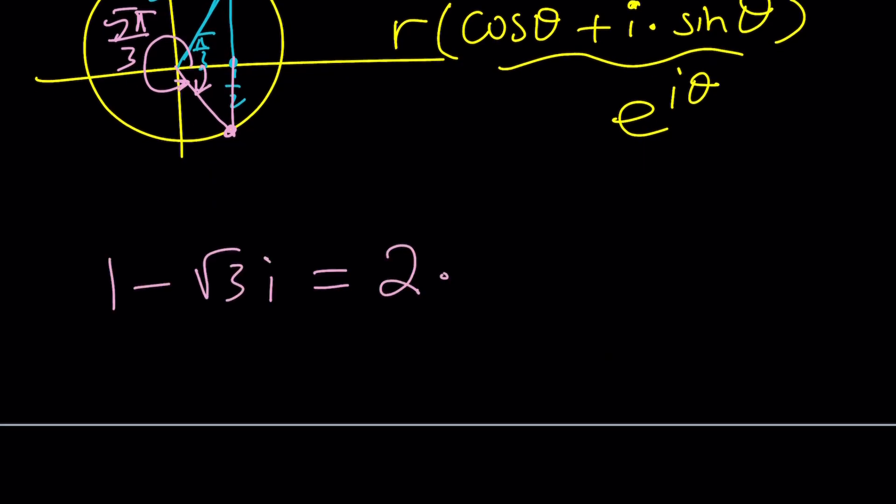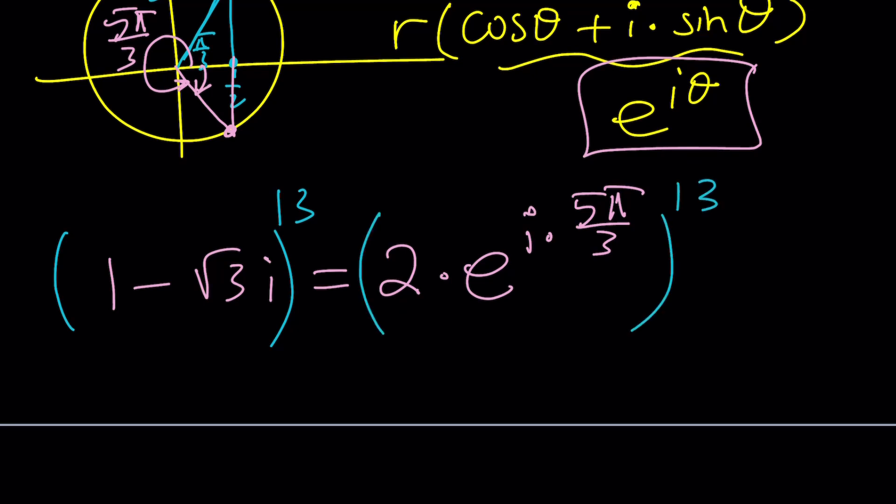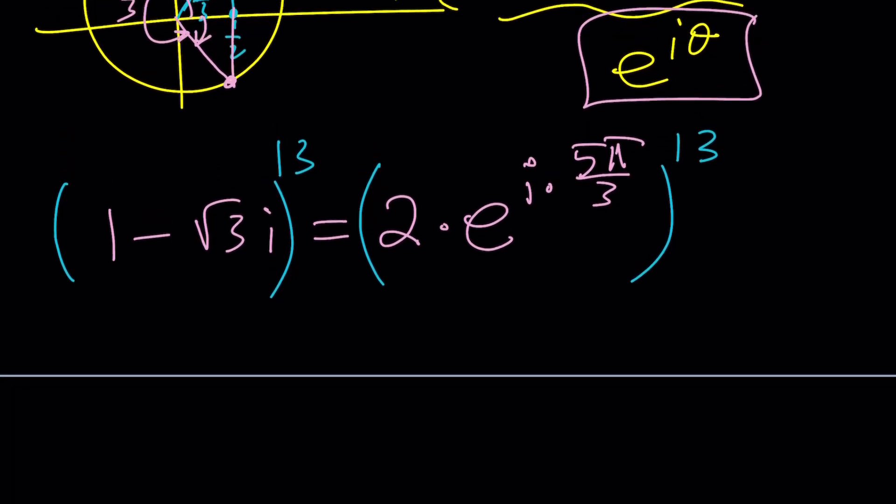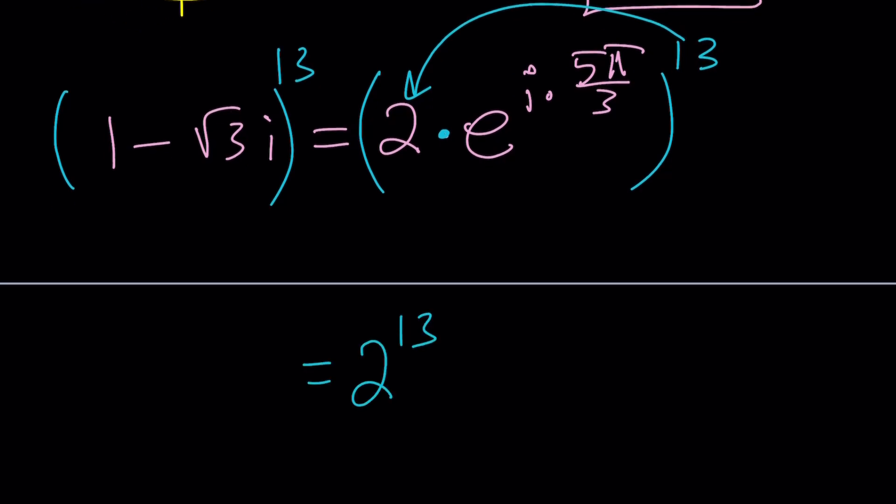1 minus root 3i is 2 times e to the power notice that you're going to write i theta i times 5 pi over 3 which is your argument. Make sense? Great. So what is so good about this though? Well if you write a number in polar form you can easily raise it to any power you want. It could even be 2023 or are we in 2024? 2024? Whatever. Years ago by quick right? It's already May almost. A couple days maybe. Anyways you can raise both sides to the power of 13 and on the right hand side you can just use the rules of exponents. Easy. This is going to be 2 to the power of 13 and then the exponential is just going to multiply by 13. That's going to give us e to the power i times 65 pi over 3.